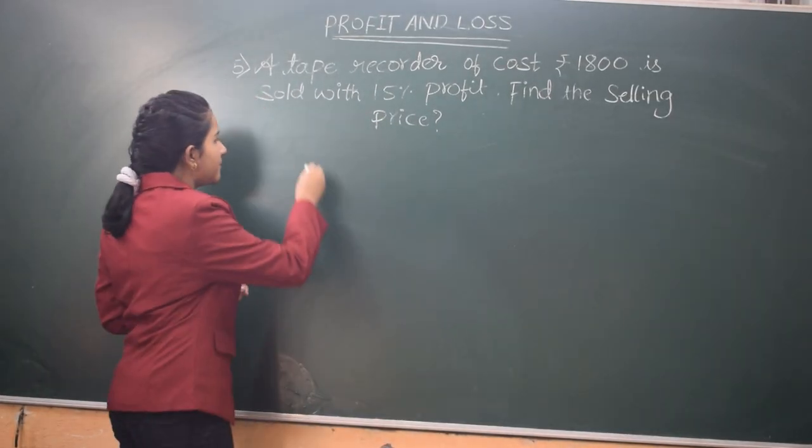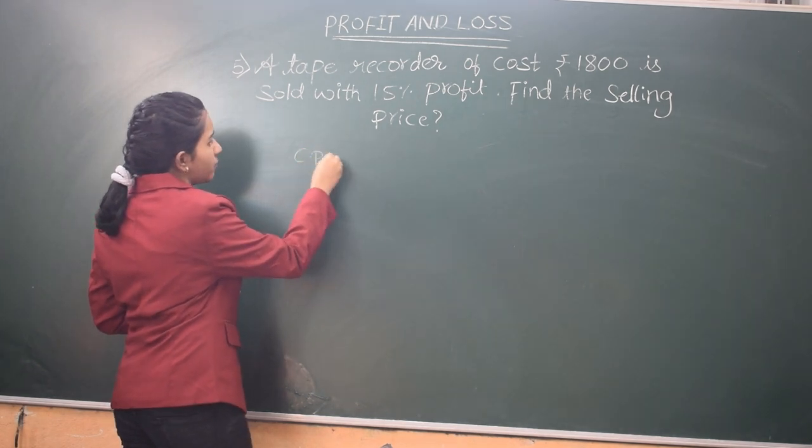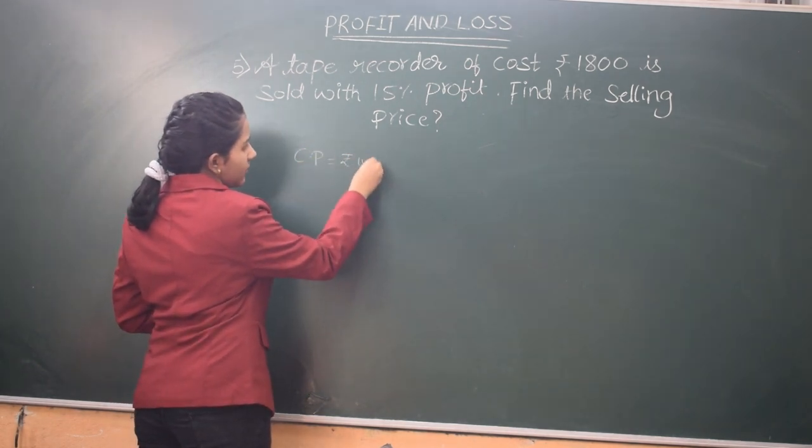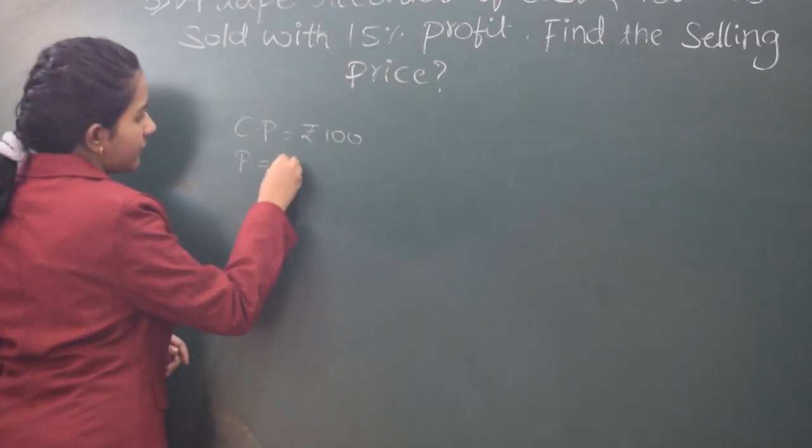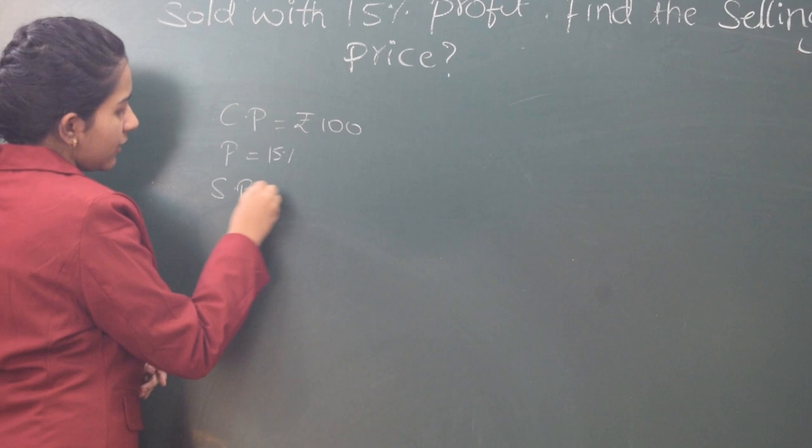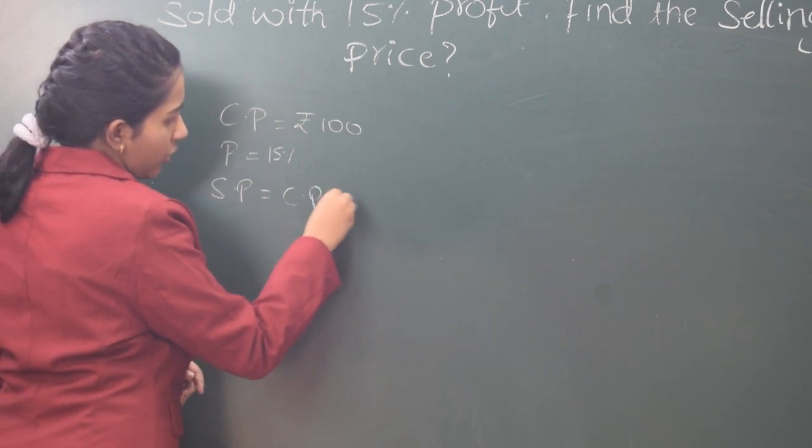To do this, we will keep that the cost price is Rs. 100. So, if cost price is 100 and profit is 15%, then selling price will be cost price plus profit.